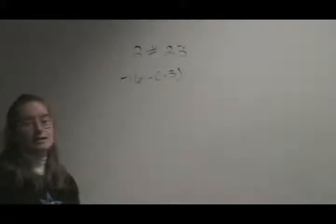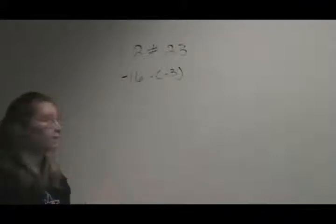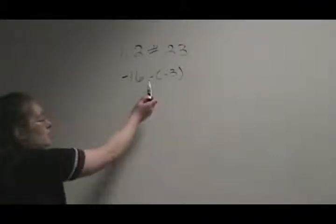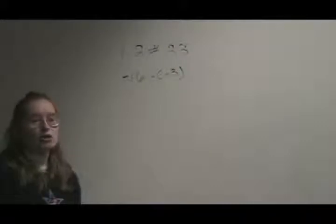Okay, we are doing number 23 in section 1.2, and we are doing arithmetic with real numbers. As you can see, we have two negative signs side by side. Two negatives cancel each other out and become a positive.